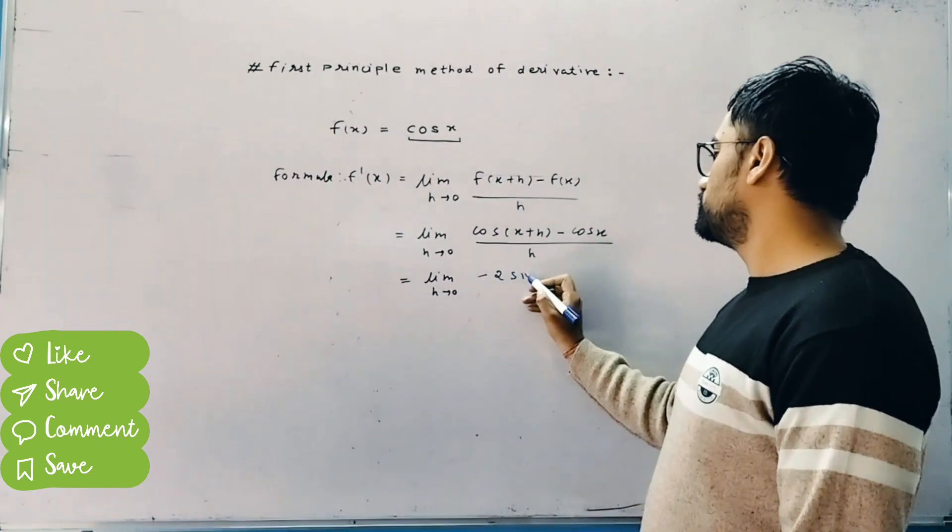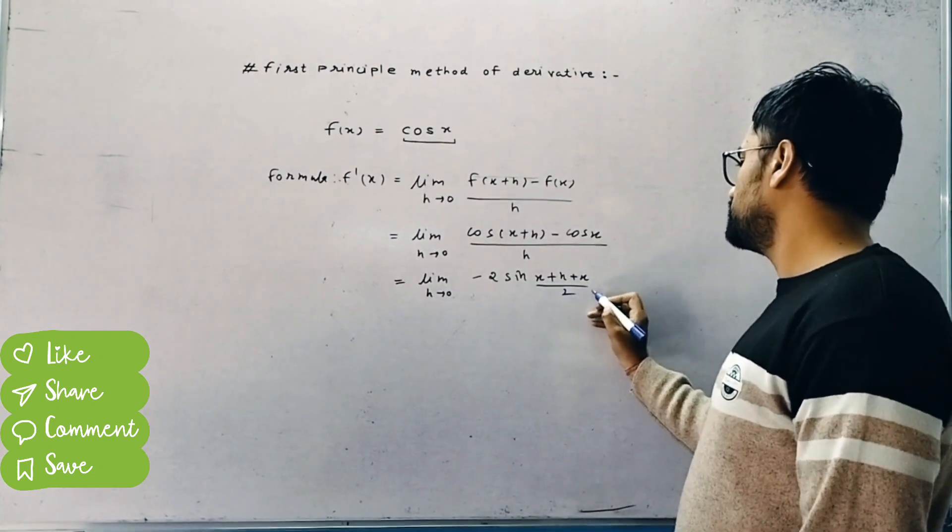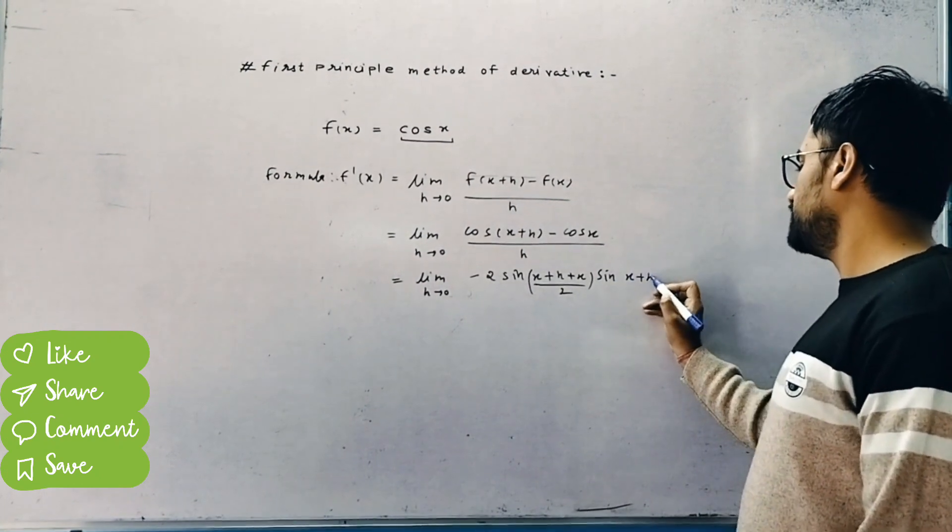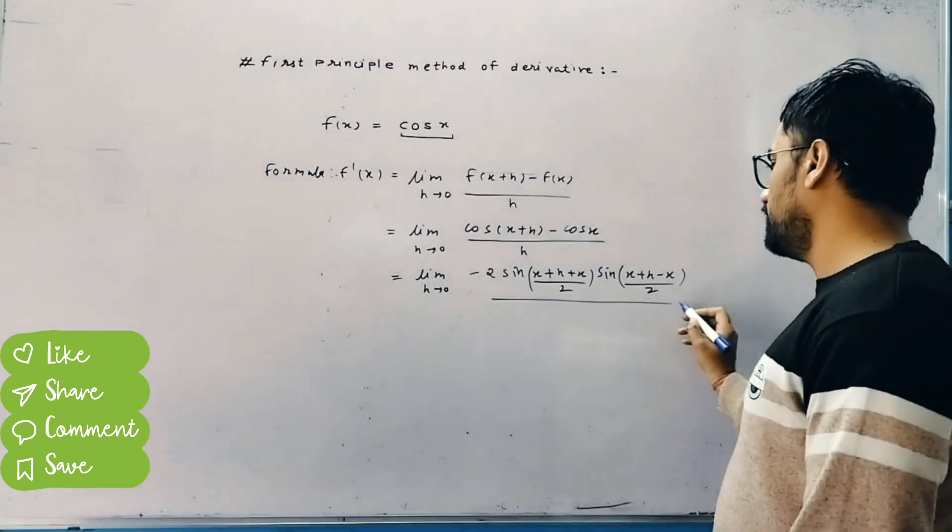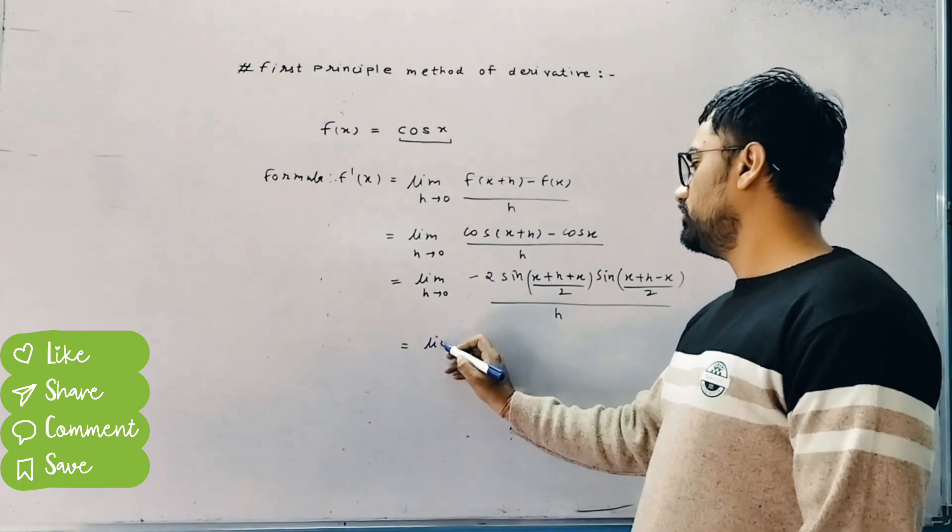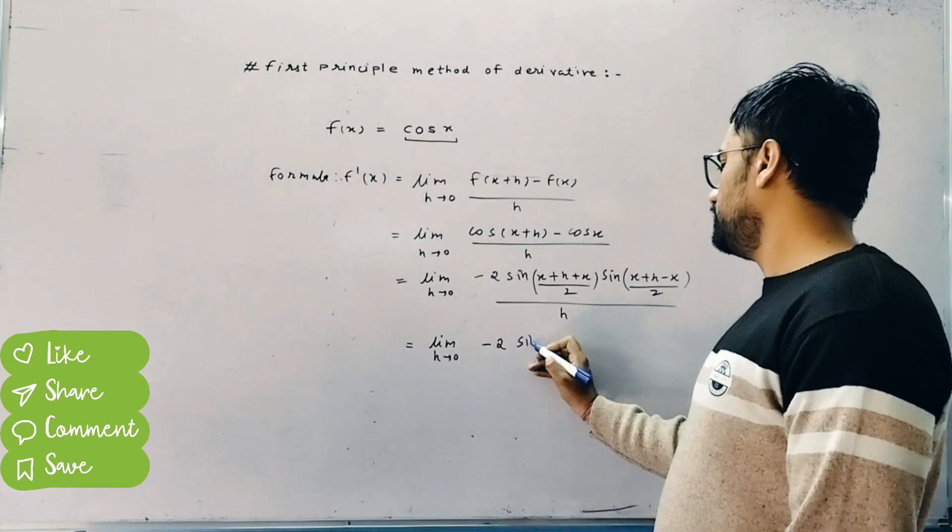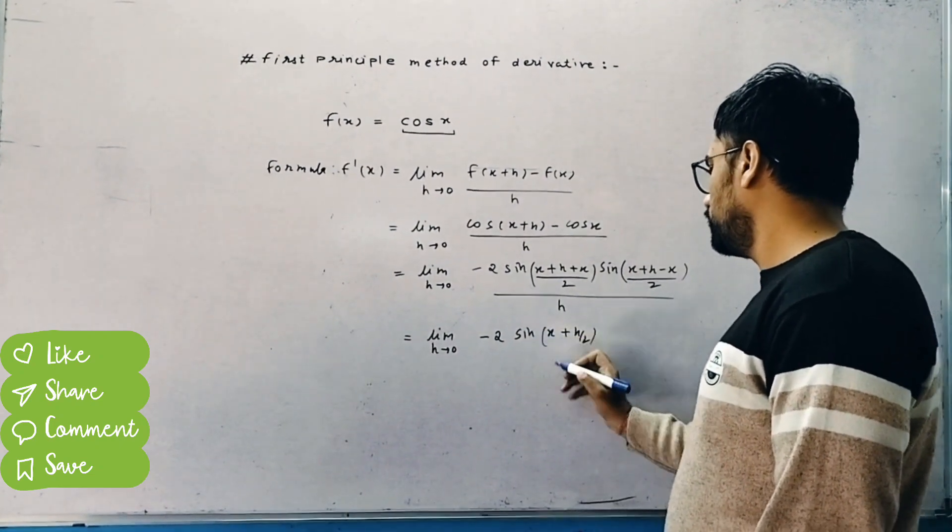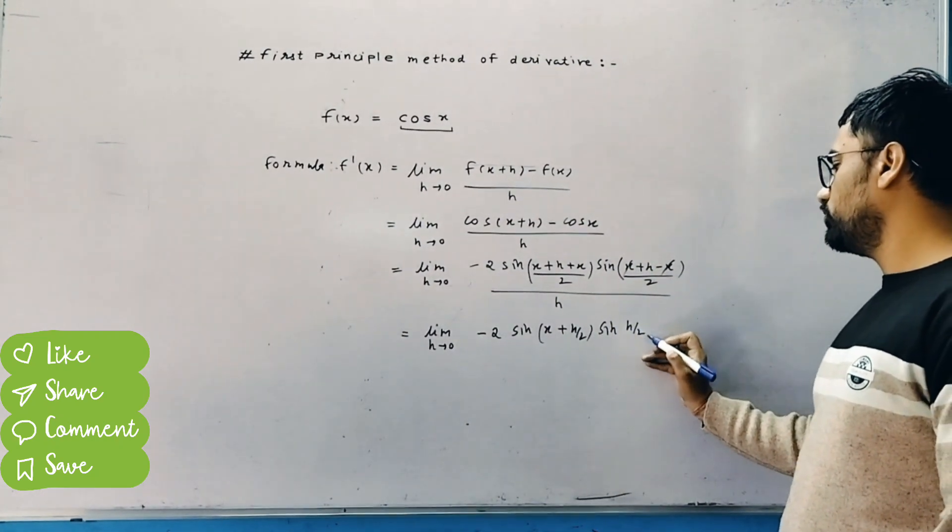Using the formula 2 sine C plus D by 2, C minus D by 2, we divide by two. We get 2 sine, sine x plus h by 2, and here we have x cancel out, and we have sine x by 2.